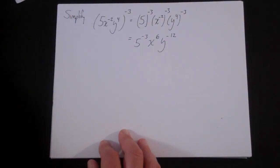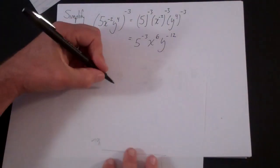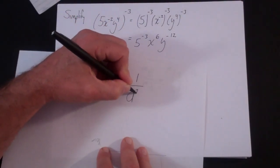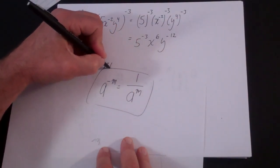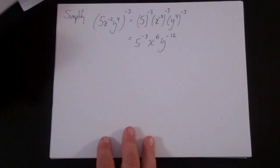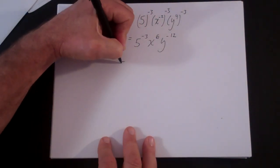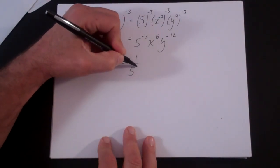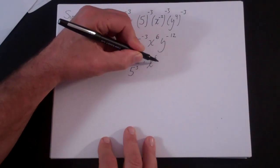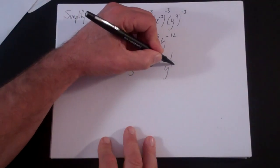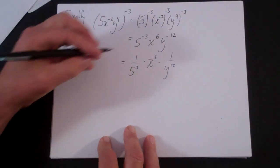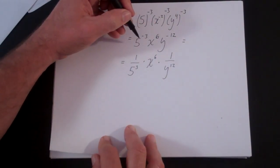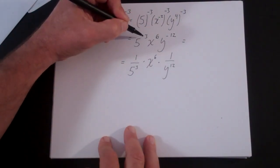Now you need to think about what it means to have negative exponents. The rule is that a to the minus m equals 1 over a to the m. So a negative exponent in the numerator means the term should be in the denominator, and if it's already in the denominator, a negative exponent means it should move to the numerator.